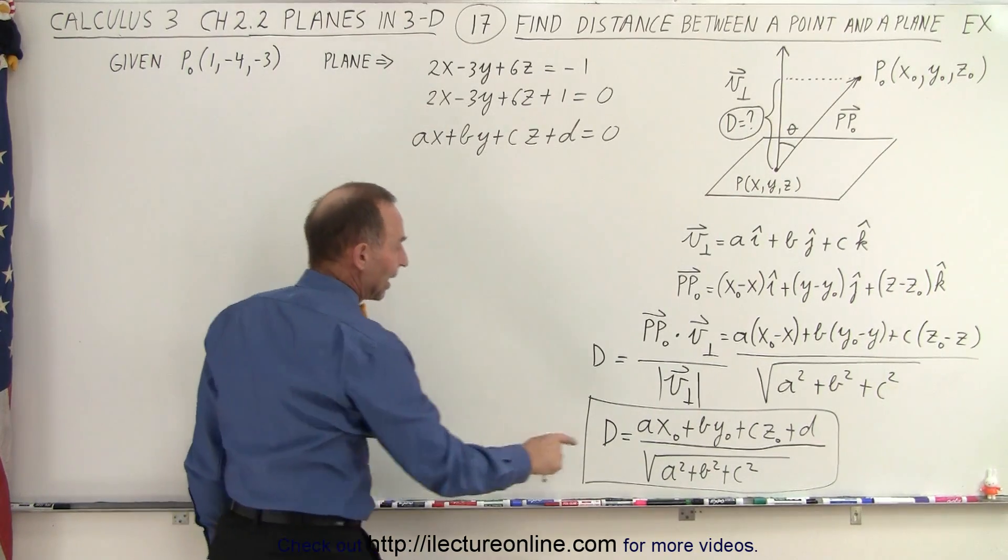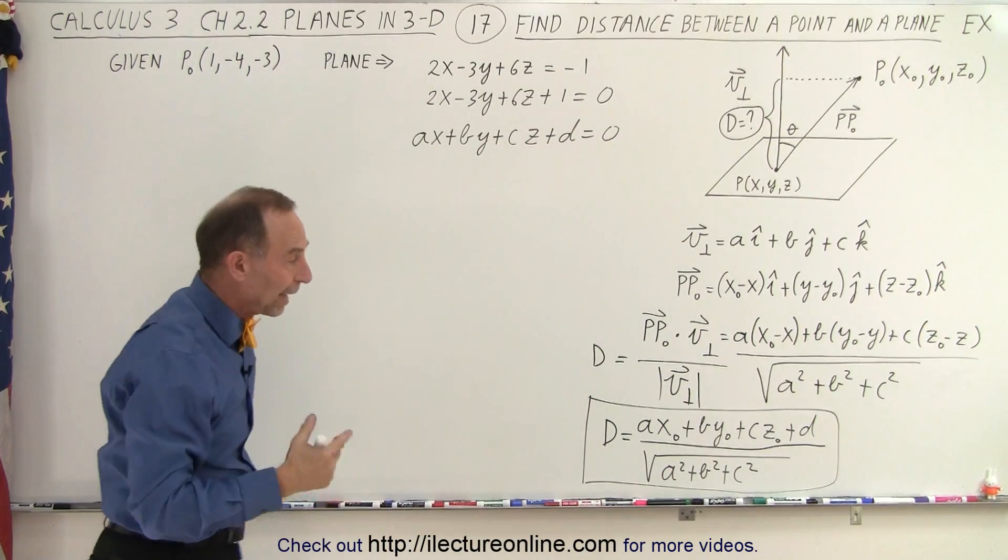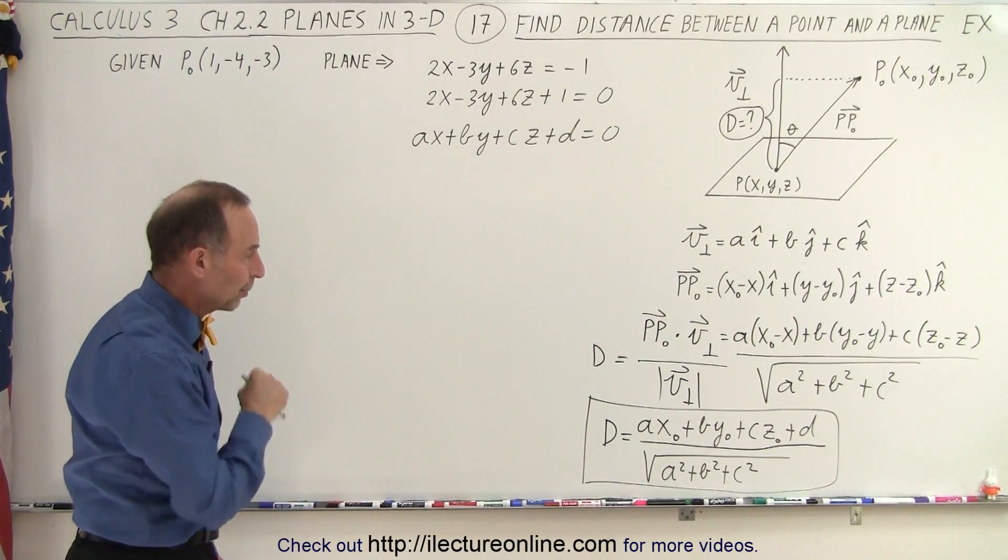And notice that a, b, and c can also be found right here. Those are the components or the magnitudes of the components of the perpendicular vector.